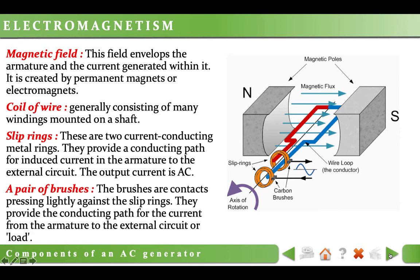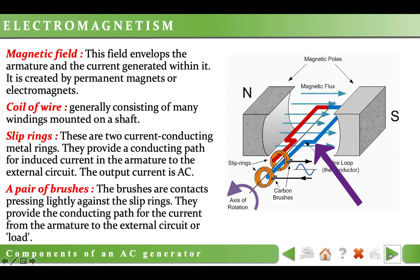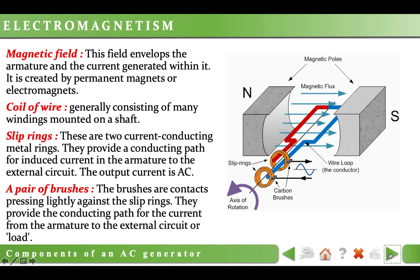An AC generator mainly consists of the following components: magnets, which produce the magnetic field; a coil of wires, which rotates in the magnetic field produced by the magnets — in this figure we have only one turn of coil, but generally there are several; slip rings, which are two current-conducting metal rings that provide a conducting path for the induced current in the armature to the external circuit. Slip rings are the component which makes this generator an AC generator by producing an alternating current — a current which continuously changes direction. The last part is a pair of brushes, which are contacts pressing lightly against the slip rings, providing the conducting path for the current from the armature to the external circuit or load.